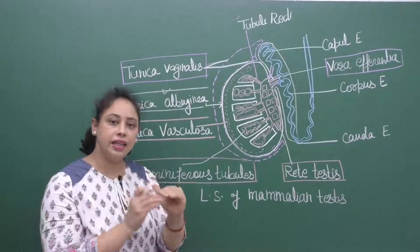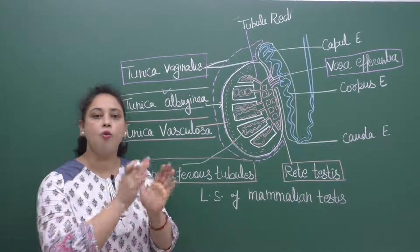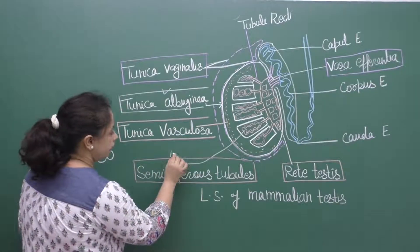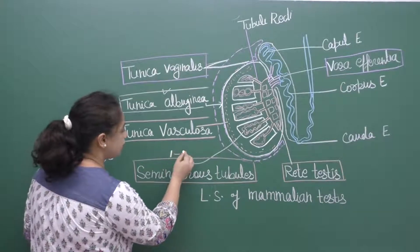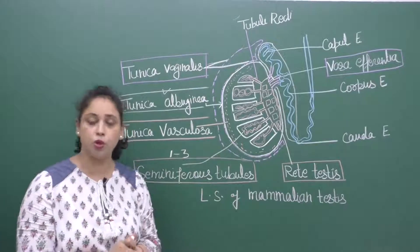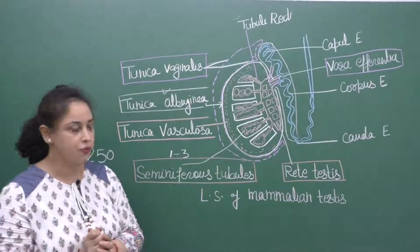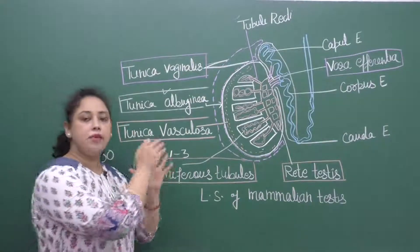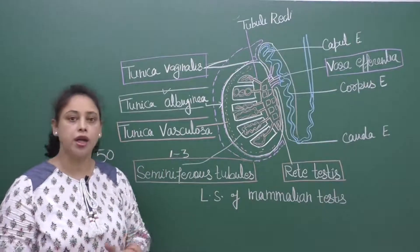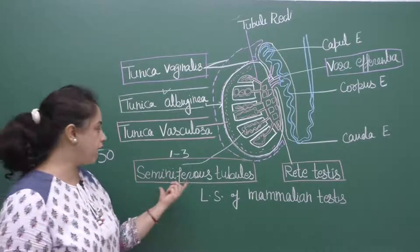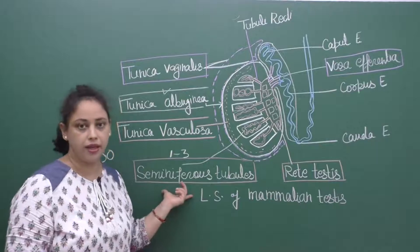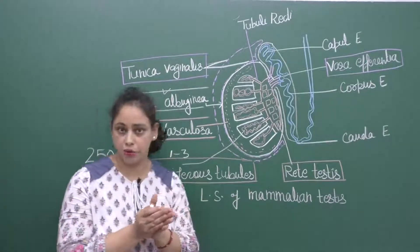Each testicular lobule can contain one, two, or three seminiferous tubules. Sperm formation occurs inside the seminiferous tubule — that is the exact location where sperm formation is taking place.